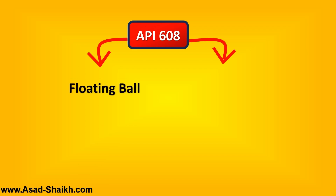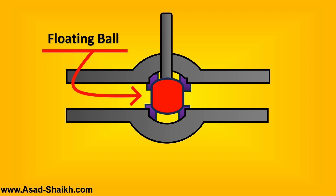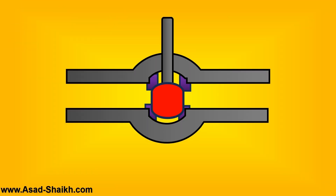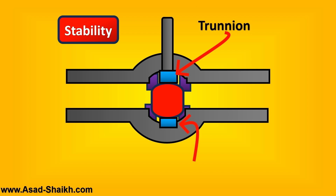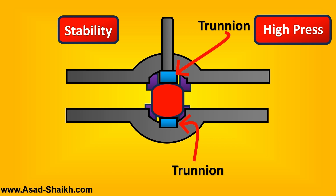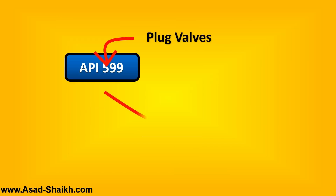API 608 and API 6D are standards for ball valves, divided into two important categories: floating ball valve and trunnion-mounted ball valve. In a floating ball valve, the ball is supported only by soft seats. As fluid passes, the ball rotates and the elastomeric seats keep it in position. In a trunnion-mounted ball valve, a trunnion provides additional support to keep the ball stable even in high pressure drop applications. Trunnion-mounted ball valves perform better in high-pressure applications, but their cost is significantly higher than floating ball valves.